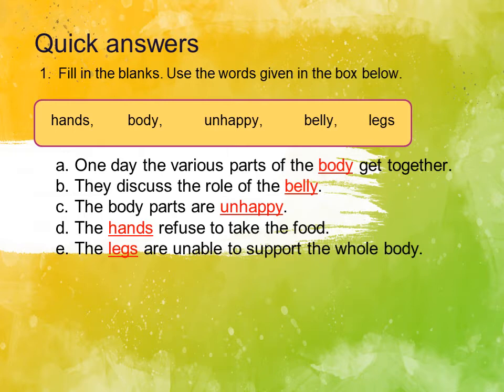What do the various parts of the body do? They discuss the role of the belly. The second question is: they discuss the role of the dash. The answer is: they discuss the role of the belly. The various parts of the body get together and discuss the role of the belly.